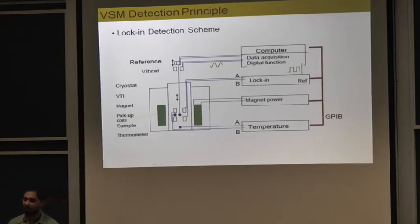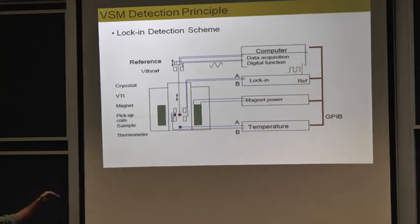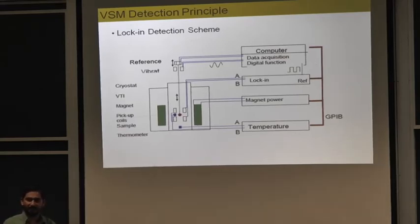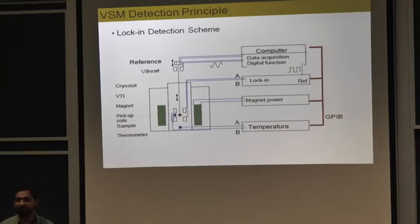How do we detect this signal? We use the lock-in detection scheme. The lock-in detection scheme locks the signal at a particular frequency. The output signal from the sensing coil goes to the lock-in amplifier, gets amplified, and is multiplied with the reference signal. When multiplied with the reference signal, you can extract a very small signal buried in the noise — you can extract the signal from noise.